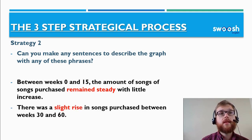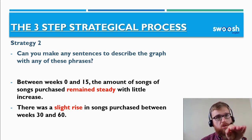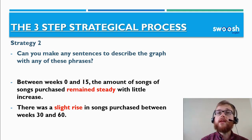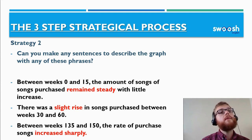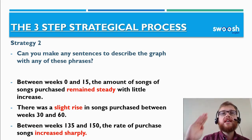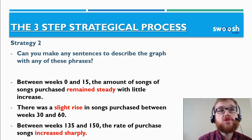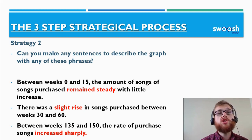A second example: 'There was a slight rise in songs purchased between weeks 30 and 60.' The trend started quite flat and then increased a little, so 'slight rise' works well. Another example: 'Between weeks 135 and 150, the rate of purchased songs increased sharply' — reflecting the massive increase. So there are many combinations we can use: remain steady, slight rise, increased sharply.